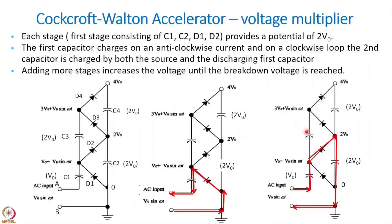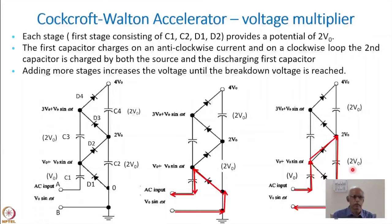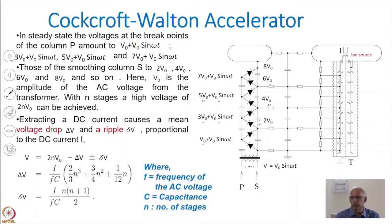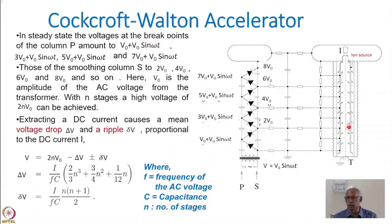Like this you can keep adding units — this is called one stage, then the next stage, and so on. Each stage gives a voltage of 2V₀, so with 10 stages you have 2 × n × V₀. The ultimate aim is to accelerate particles, so you connect an accelerating tube with an ion source enclosed in a high-voltage terminal. The ion source connects to several electrodes and the particles are accelerated.